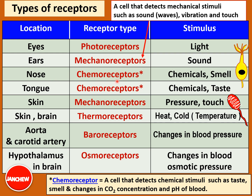The nose has chemoreceptors which are sensitive to chemicals and can detect chemicals in the air — that is how we have the stimulus of smell. The tongue also has chemoreceptors that can detect chemicals in food such as sweet or sour food, creating the stimulus of taste — sweet, sour, or salty taste. The skin has mechanoreceptors too, but different from those in the ears; they detect the stimulus of pressure and touch.